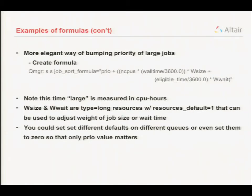A more elegant way of bumping the priority of large jobs over small jobs: here you can see we're using wall time instead of memory but normalized to hours, and we've also included a weighting factor so that different queues can have different emphasis for different types of jobs. A queue could set a wall size weight to a huge value, and in that queue large jobs would be emphasized over jobs with just large eligible times, and vice versa for the wait time.